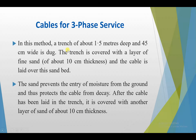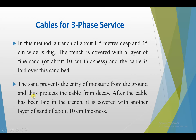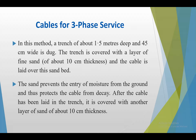In the direct laying method, a trench of about 1.5 meters deep and 45 cm wide is dug. The trench is covered with a layer of fine sand about 10 cm thick, and the cable is laid over this sand bed. The sand prevents ingress of moisture from the ground and thus protects the cable from decay. After the cable is laid, it is covered with another layer of sand about 10 cm thick.